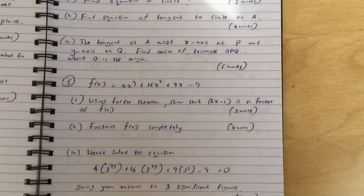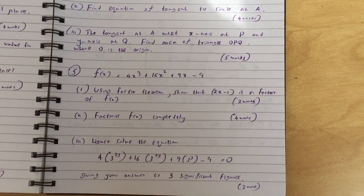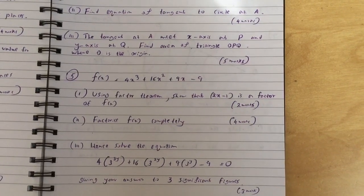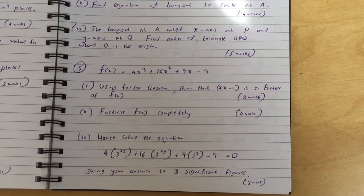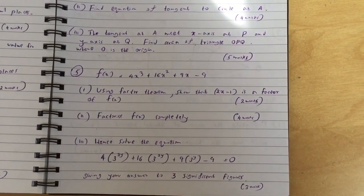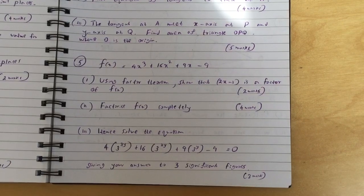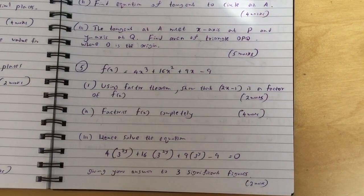Question five: f(x) equals 4x cubed plus 16x squared plus 9x minus 9. Part one: using factor theorem, show that 2x minus 1 is a factor of f(x). Part two: factorize f(x) completely.